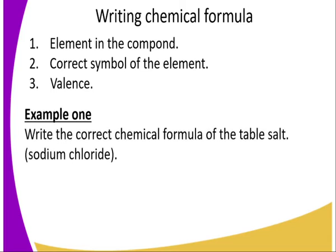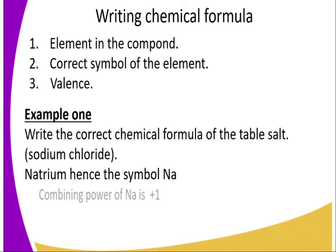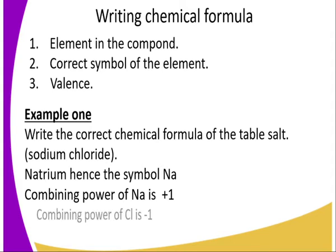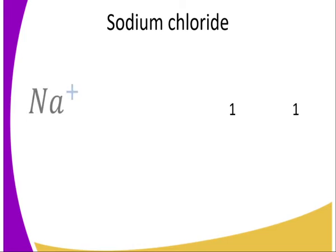Example one: write the correct formula for table salt, commonly known as sodium chloride. Sodium has the scientific name natrium, hence the symbol Na — we don't use SO. That's why we must know the correct scientific name of these compounds. The combining power of sodium is positive 1, that is its oxidation number. And the combining power, the oxidation number, of the chloride ion is negative 1.